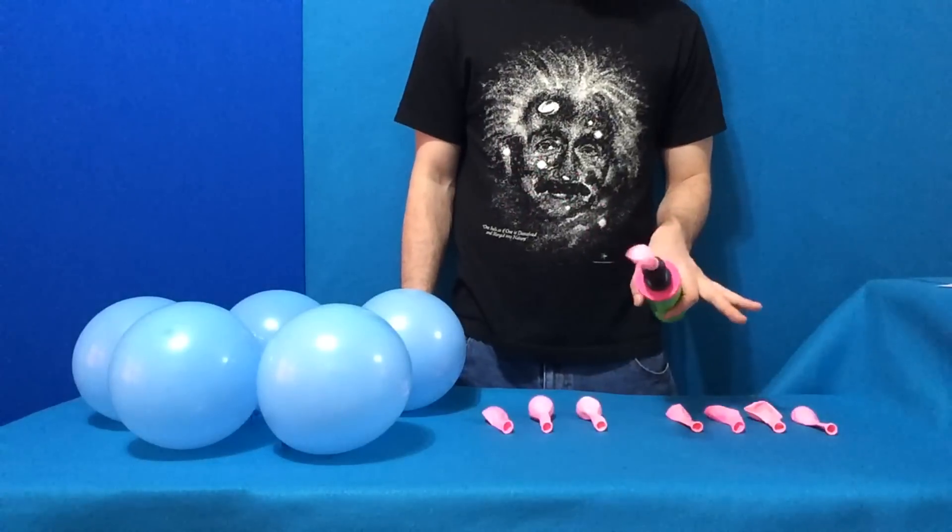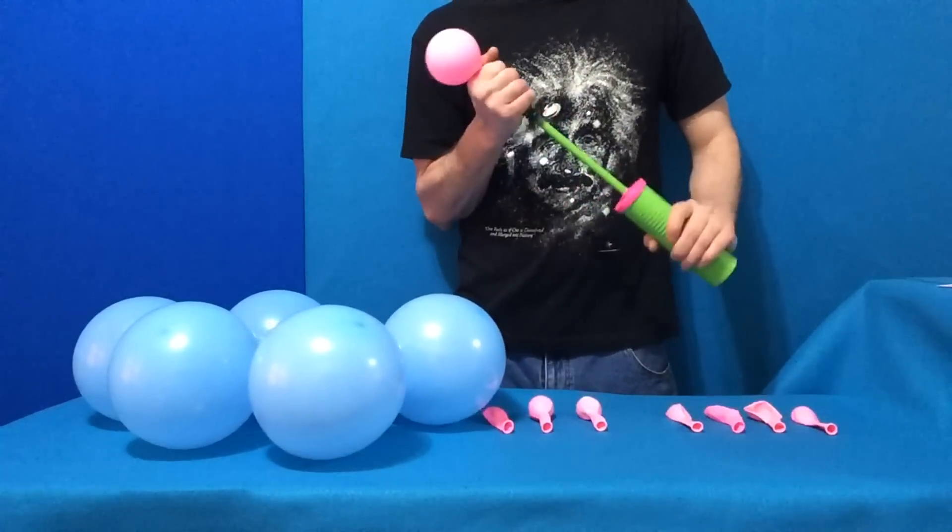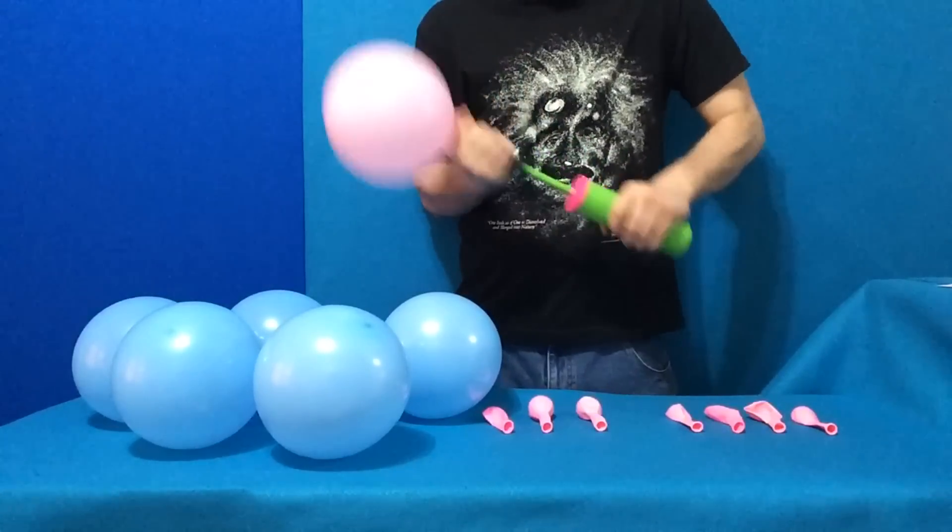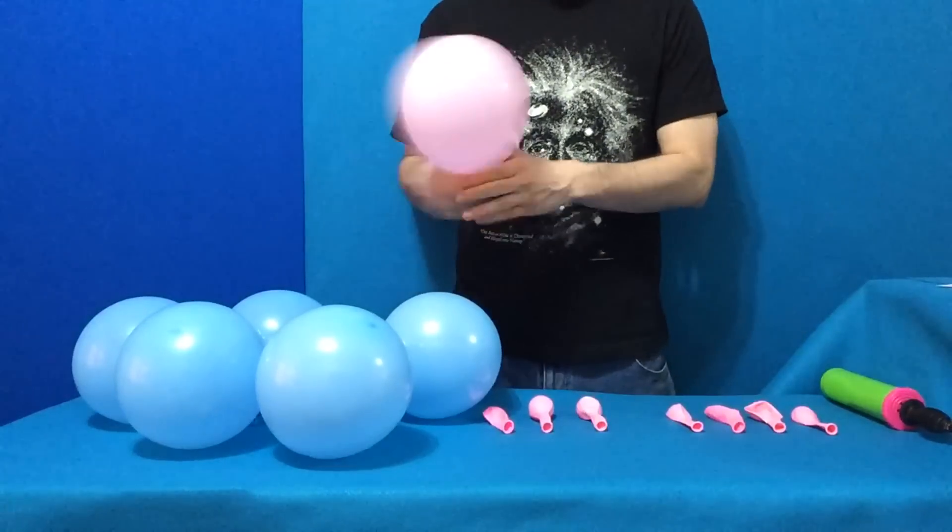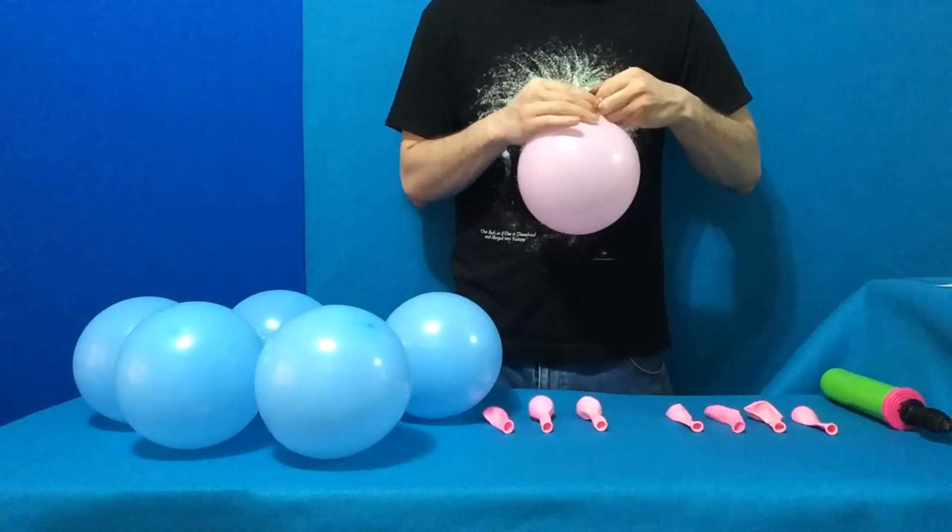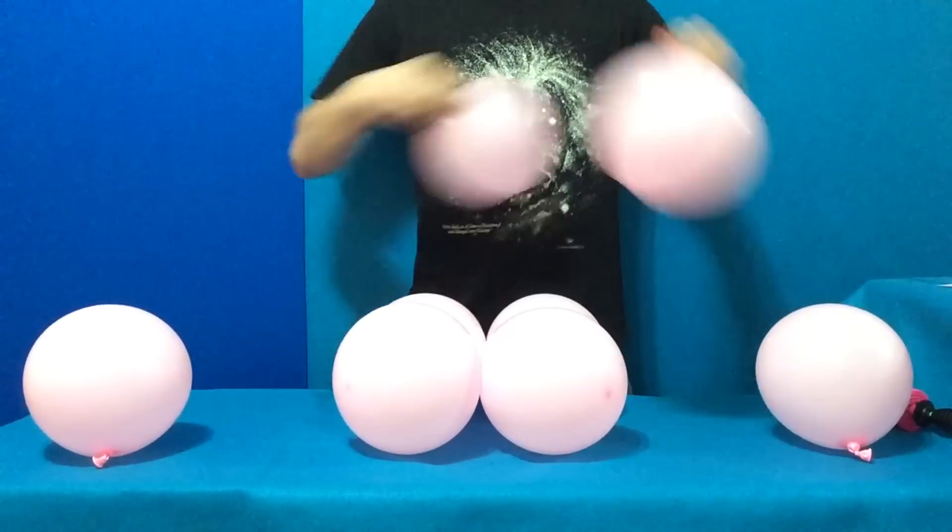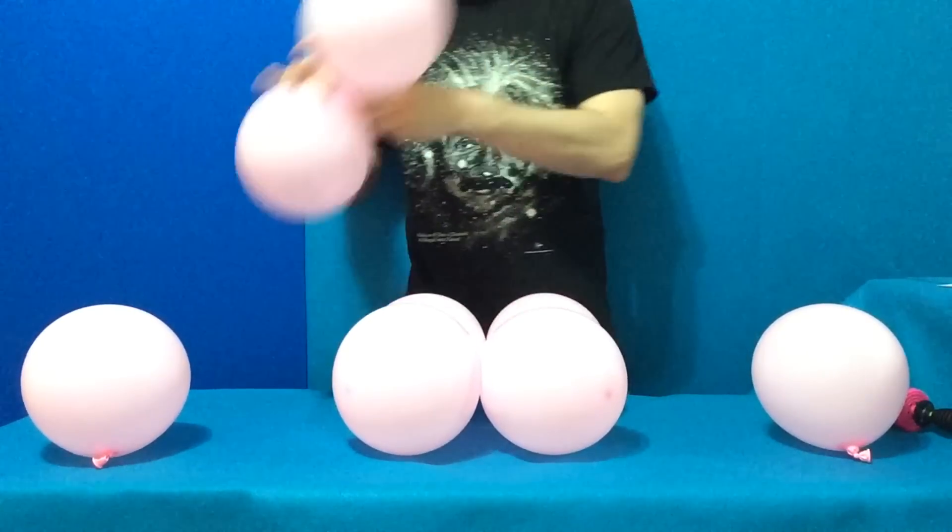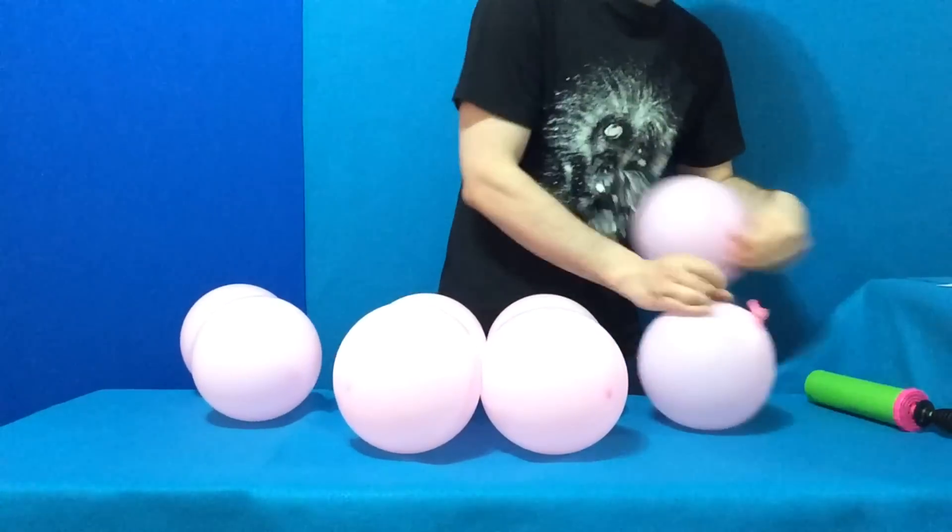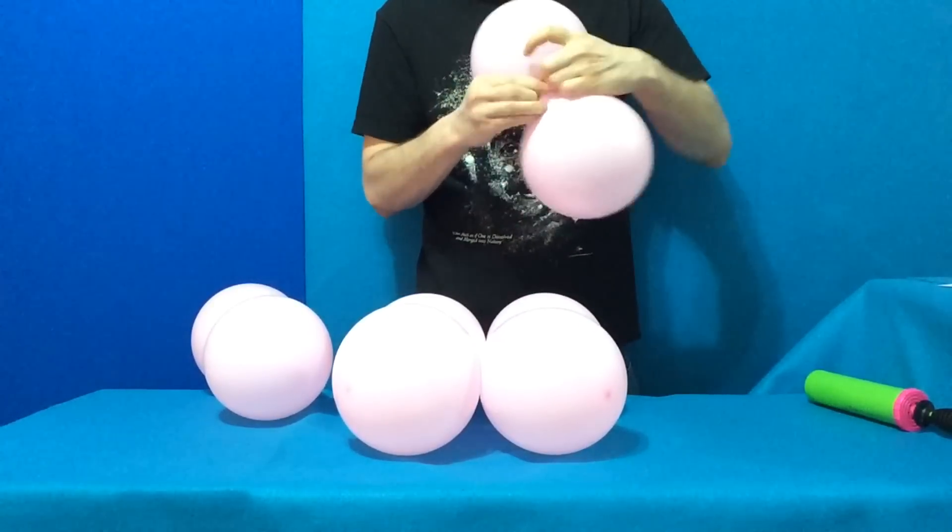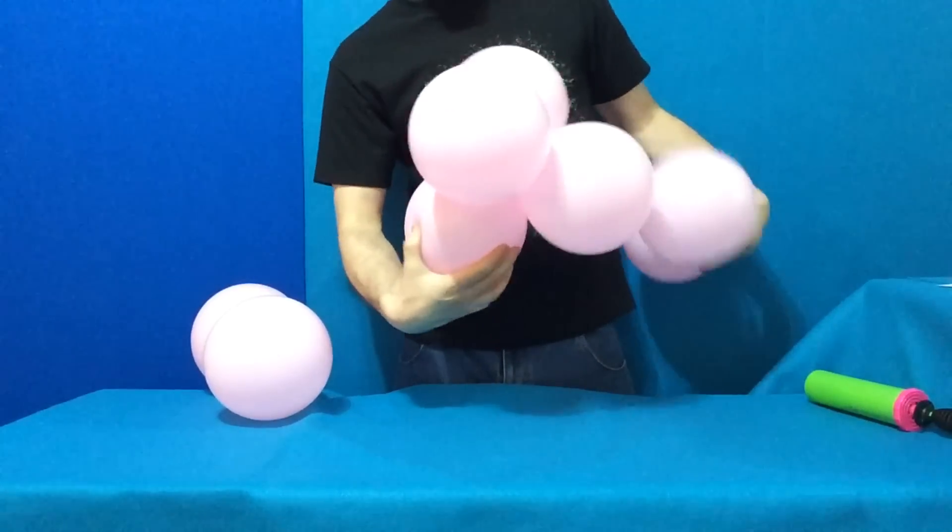Inflate eight pink rounds. Six pumps each. Two, three, four, five, six. Matching the blues. Pair them up by tying them together. And spin them into these four balloon shapes, called quads.